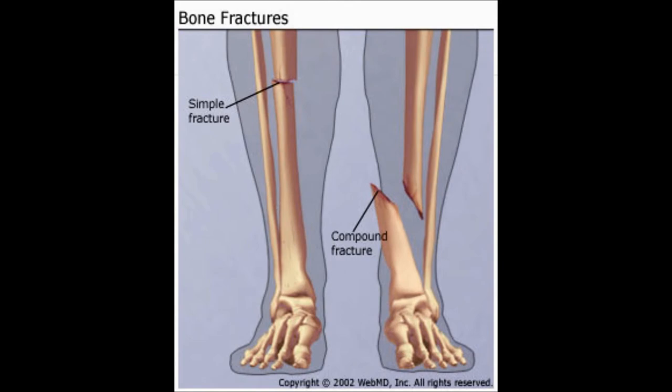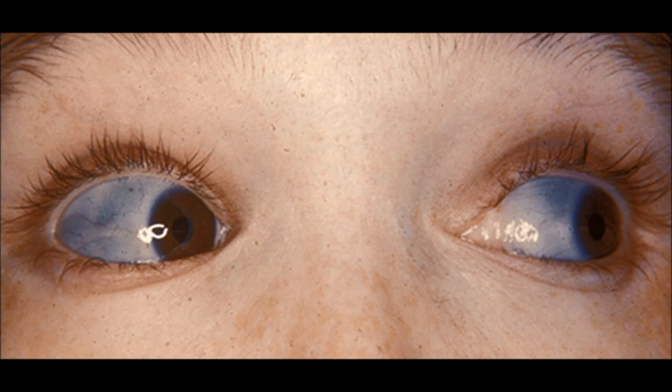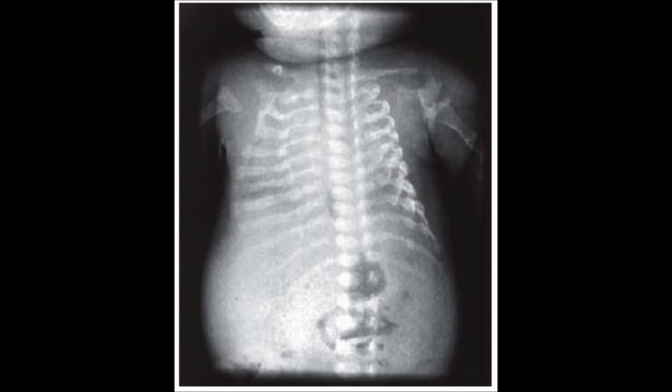Type 4 OI is the most variable form and symptoms can range from very mild to very severe. 25% of infants are born with bone fractures, but many others might not get any fractures until later in life. Leg bones can be bowed at birth, but this often decreases throughout life. Progressive hearing loss, a blue-gray tint of the sclera, teeth problems, scoliosis, a triangular face, a deformed ribcage, and loose joints can all be symptoms. Those affected are also often shorter than average.